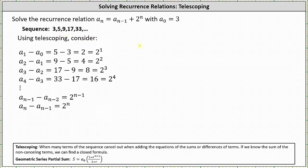a_1 minus a_0 is five minus three, which is two, or two to the first. a_2 minus a_1 is nine minus five, which is four, or two squared. a_3 minus a_2 is 17 minus nine, which equals eight, or two cubed. a_4 minus a_3 is 33 minus 17, which equals 16, or two to the fourth, and so on. If we find n differences, the last difference is a_n minus a_{n-1}, which is two to the power of n.